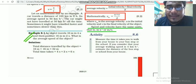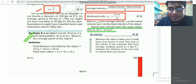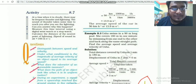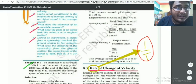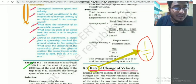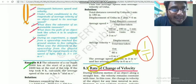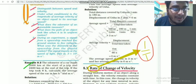Speed and velocity have the same units — metre per second. Next question: what is the difference between speed and velocity? Under what condition is the magnitude of average velocity equal to average speed? Answer in the comment section — I will check it.